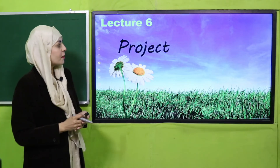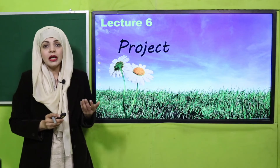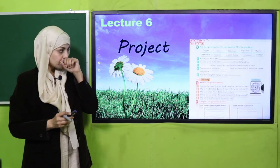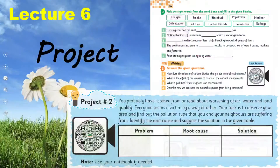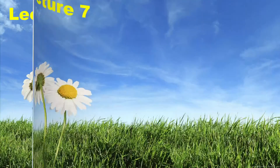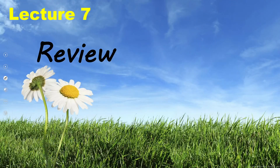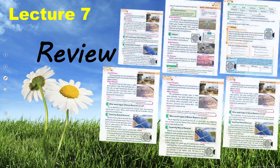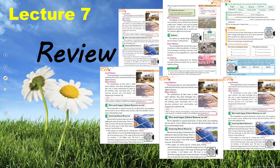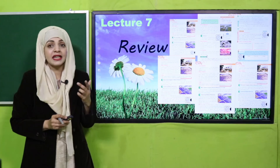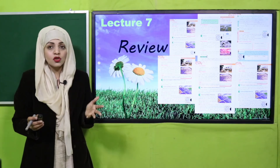In lecture number six, a project will be included where students will discuss different types of pollution and their adverse effects on our life. The last lecture is lecture number seven, which will be a review of unit number three. I will give you a complete review of all the reading pages and concepts, and by the end I will take an assessment to evaluate what students have learned from this unit.